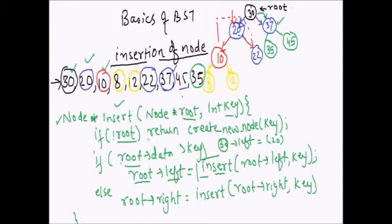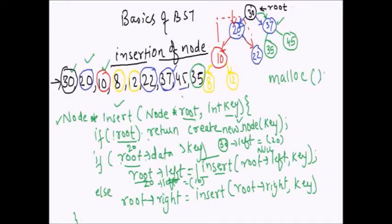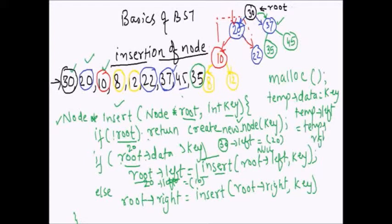Now let's say I enter 10. Root is not null; root's data (30) is greater than key (10), so we call insert with root's left (which is now 20) and key 10. Root is not null — we come to the condition, and root (20) is greater than 10, so we call insert with 20's left (null) and key 10. Root is null, so we create a node 10 and return — 20's left is set to 10. In createNode, we simply malloc and allocate the node, assign temp->data = key, temp->right = temp->left = null, and return temp.